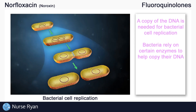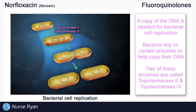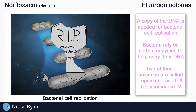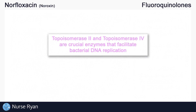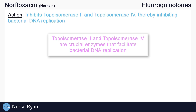Some of these very crucial enzymes are called topoisomerase 2 and topoisomerase 4. Without these two enzymes, bacterial cells would not be able to replicate, and eventually the bacteria would die off. Topoisomerase 2 and topoisomerase 4 are crucial enzymes that facilitate bacterial DNA replication, and it just so happens that fluoroquinolones work by inhibiting these two enzymes, thereby inhibiting bacterial DNA replication.